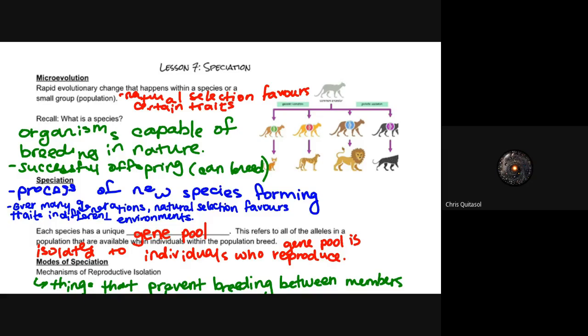Let's begin where we look at speciation, specifically the concepts of microevolution. Microevolution is a rapid change that happens in a species or small group of population, and it's usually natural selection that favors certain traits.